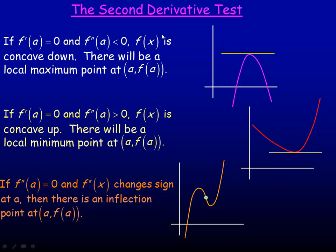The second derivative test is used to determine, through using the first and second derivative, where there might be a local minimum or local maximum point. If the first derivative is zero and the second derivative is negative, then there's a max point. If the first derivative is zero and the second derivative is positive, there's a minimum point. That's the second derivative test. Just a note about the inflection point: if the second derivative is zero and the second derivative changes sign — both those conditions have to be met — then you have an inflection point. It's possible for the second derivative to equal zero but there not to be an inflection point; the second derivative also has to change sign from positive to negative, or negative to positive.